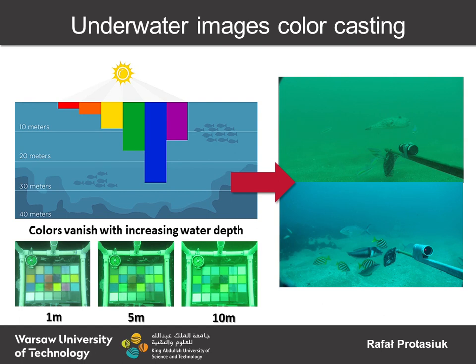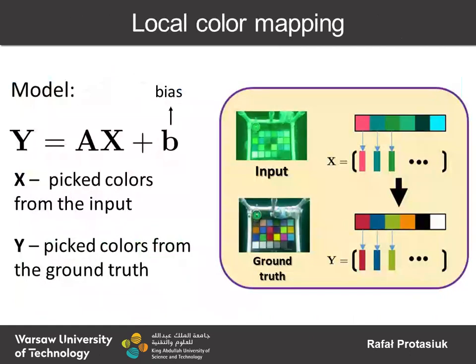To address these problems, we propose an automated underwater image enhancement method that is fundamentally based on two known approaches: local color mapping and color transfer. Local color mapping can be modeled through an affine transform that relies on a map between a few selected color samples and their ground truth.